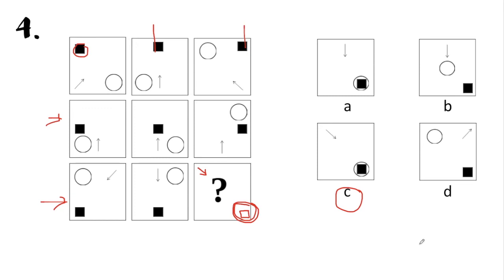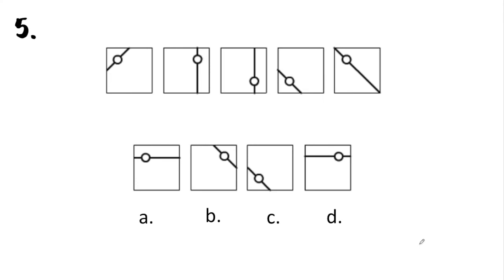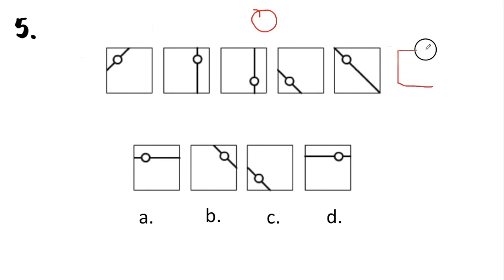Now we go to the last item of Abstract Reasoning Part 2. We are given several squares, and inside each square there's a line with a small circle. First, let's look at the movement of the small circle. It starts from the upper left corner, then upper right, then lower right — it's also moving clockwise, like the movement of the arms of a clock. So: upper left, upper right, lower right, then lower left, then back to upper left. This gives us the idea that the next square should have the small circle at the upper right.